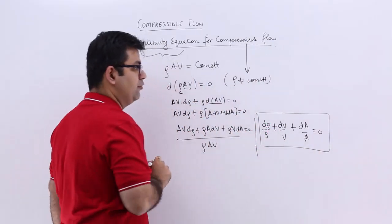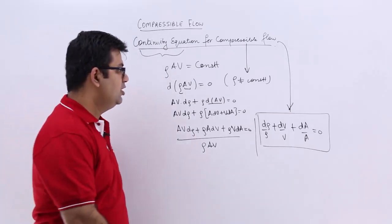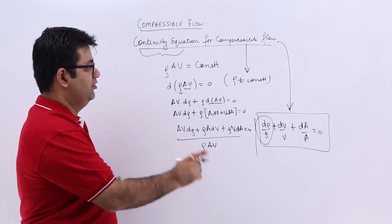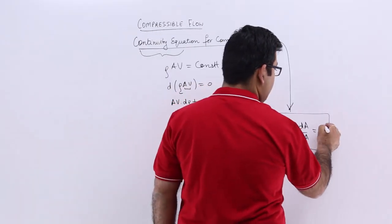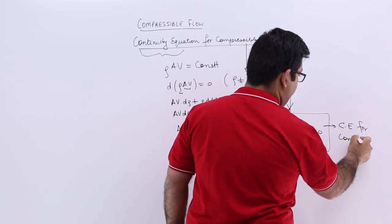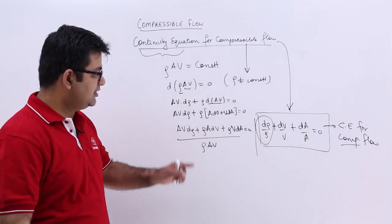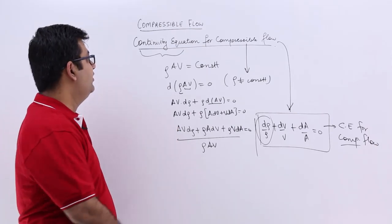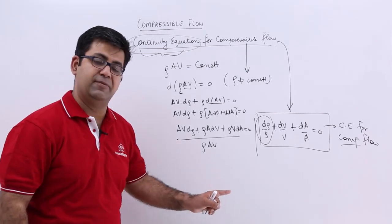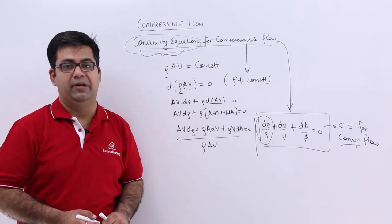This equation that we have got is the continuity equation for a compressible flow, because here we have shown that the density is not a constant value for such a flow. Make a note of this — this is the continuity equation for a compressible flow. This is the first video on this chapter. In the next video, we will talk about Bernoulli's equation for a compressible flow.